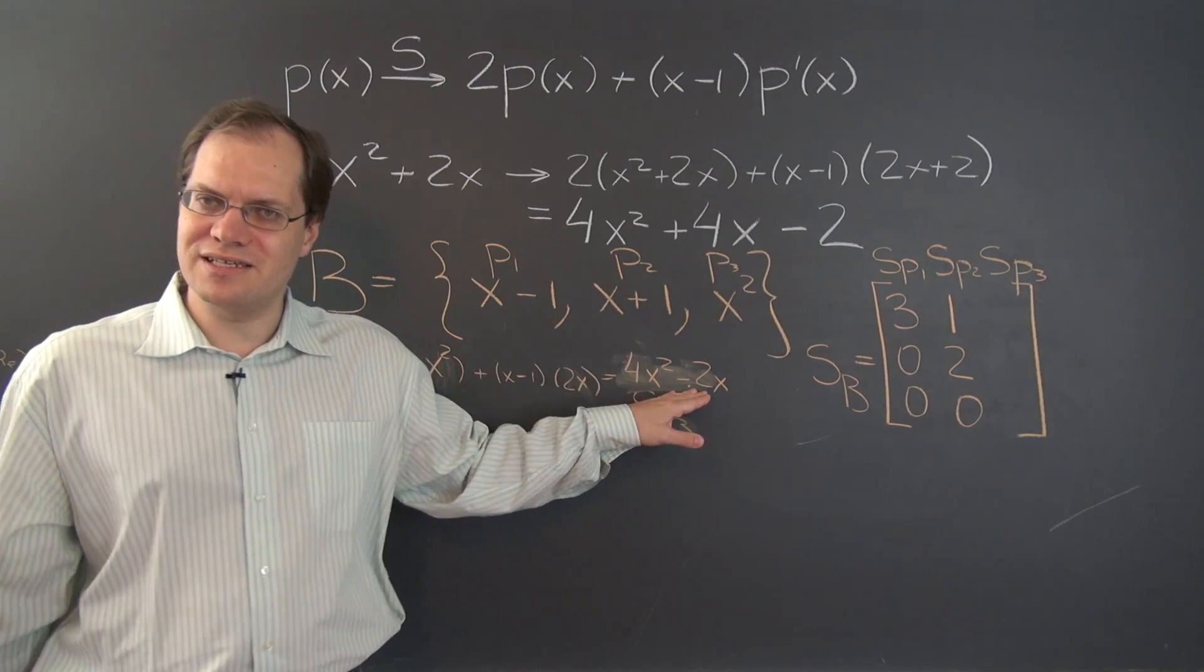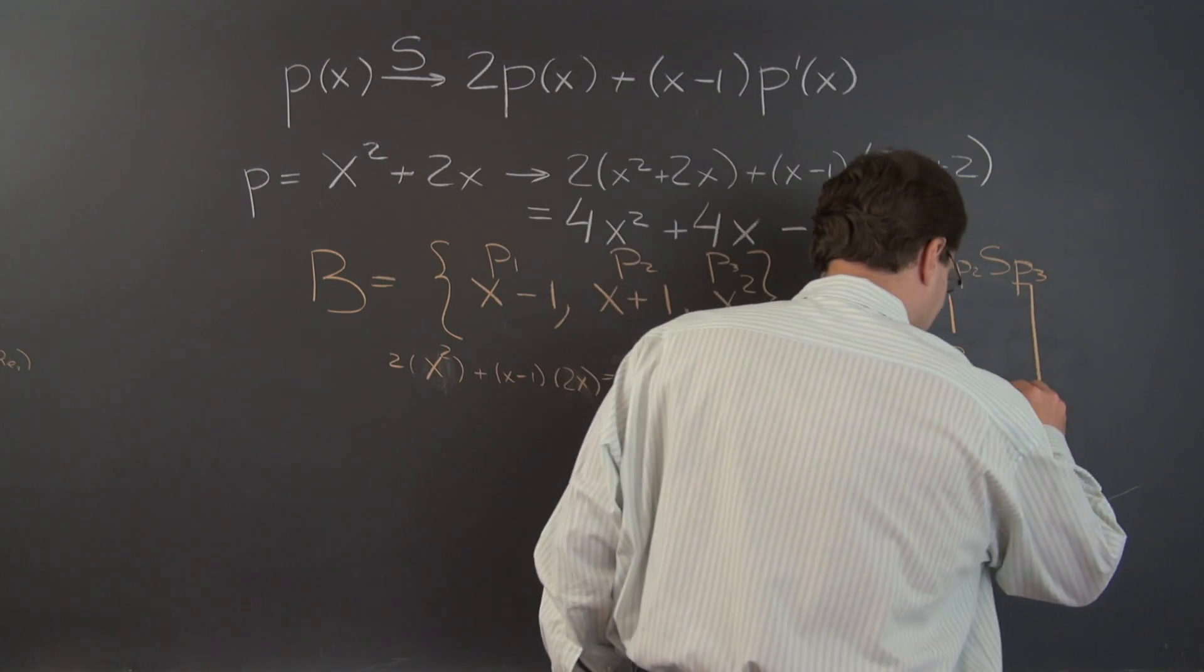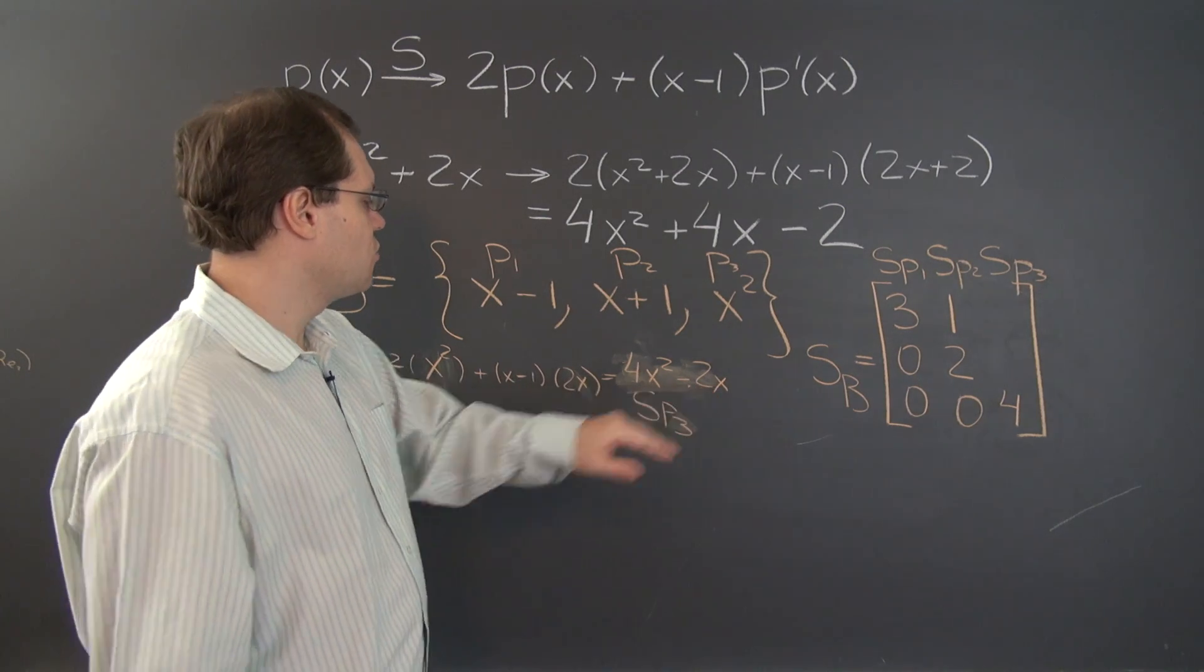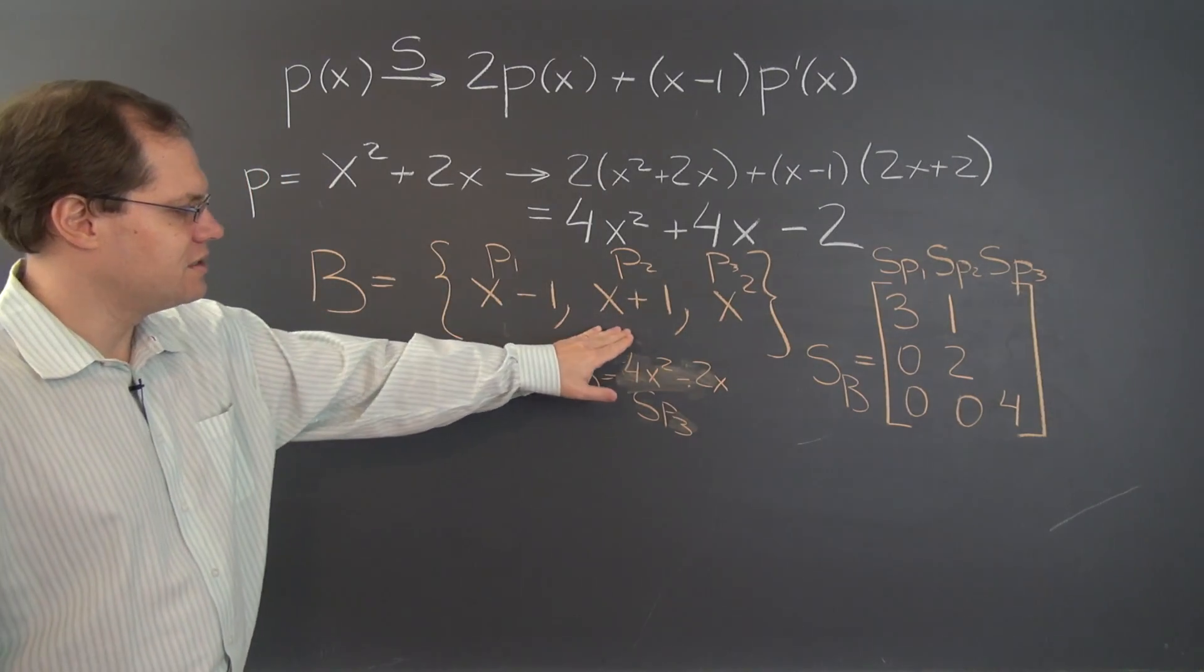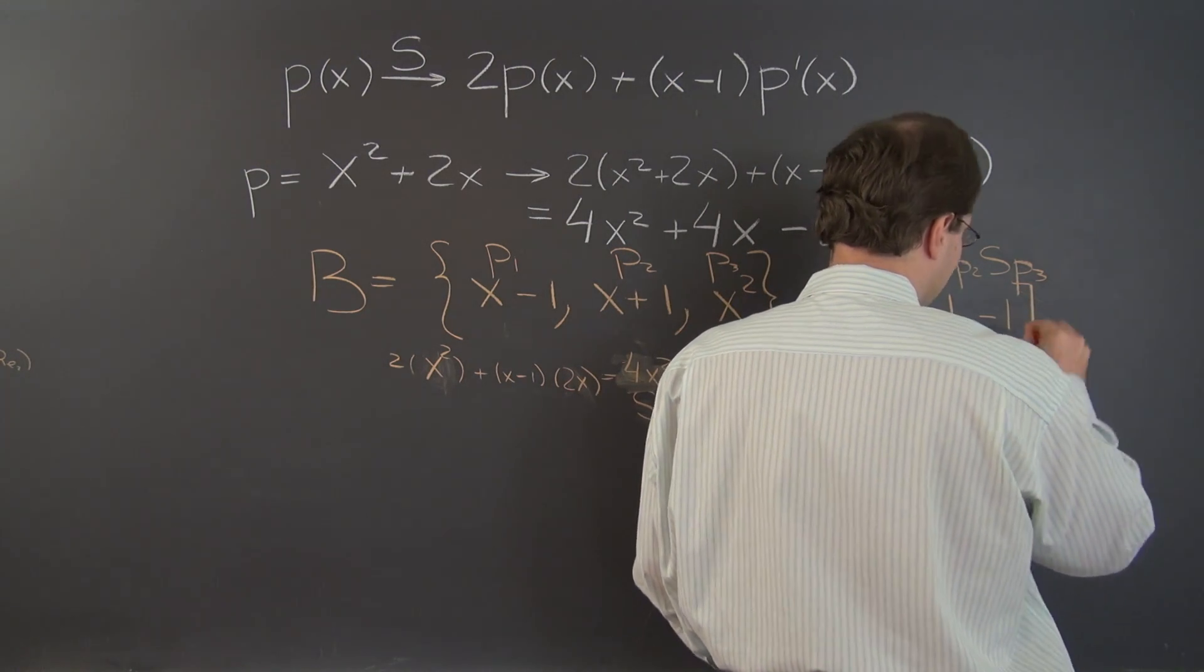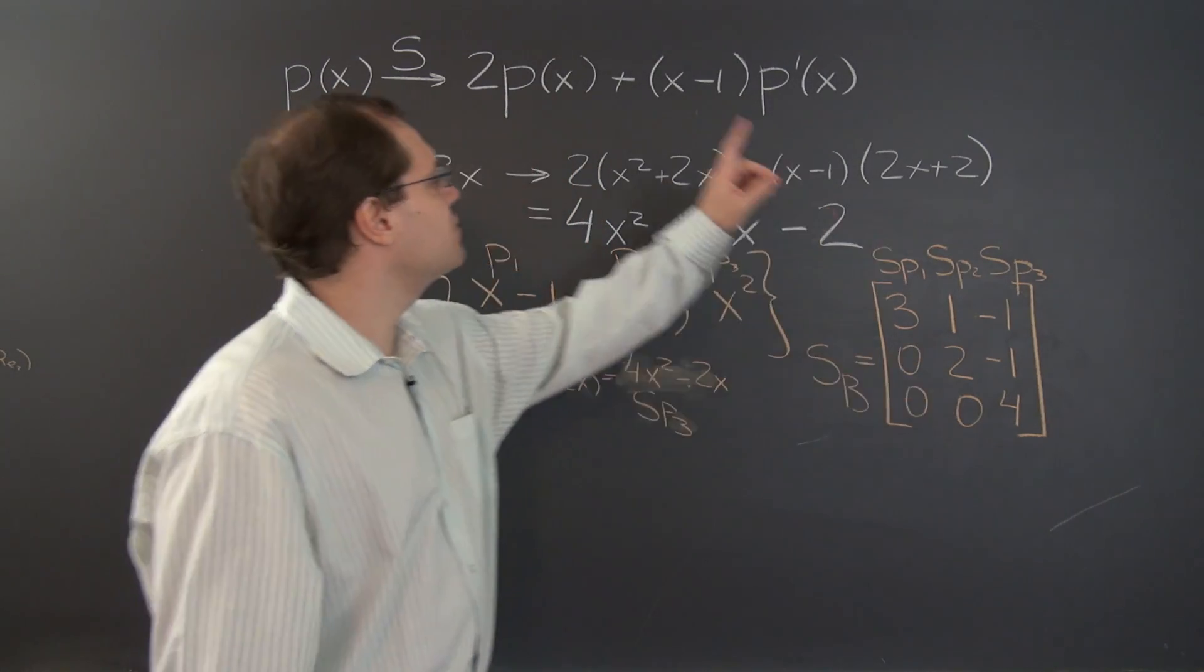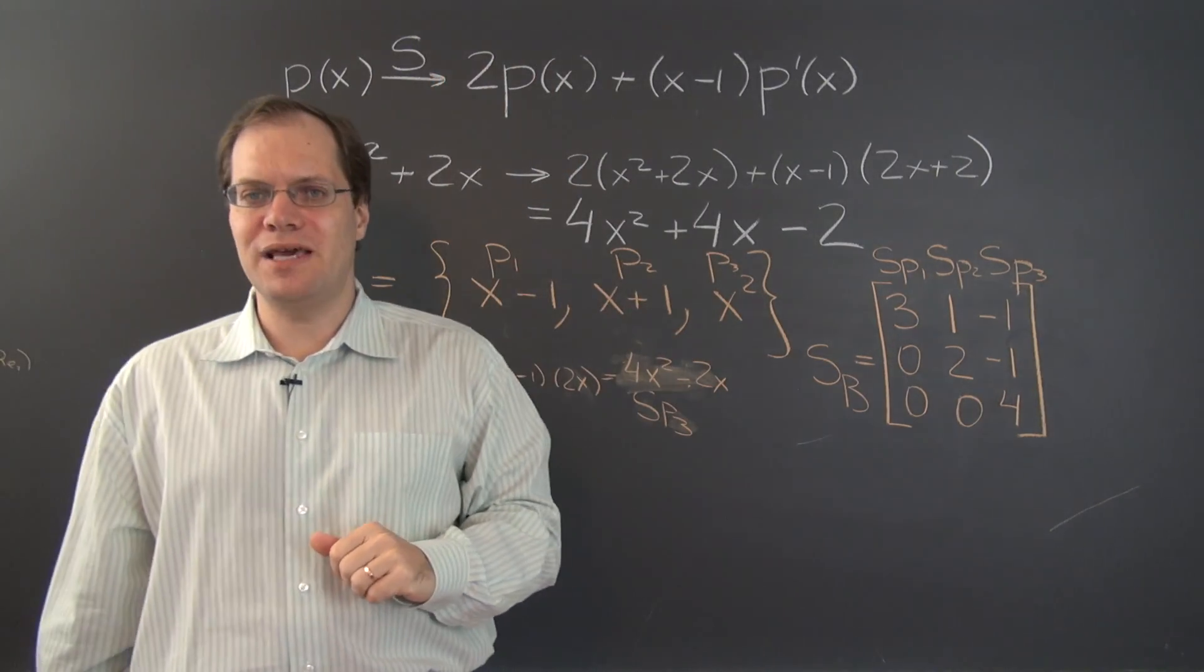And we now have to decompose this polynomial with respect to the same basis. So the one part that's obvious is that this gets a 4. And what's left is minus 2x, which of course is minus this, minus this. So minus 1, minus 1, 4. And we have accomplished the task of calculating the matrix that represents this silly linear transformation with respect to this basis.